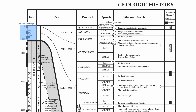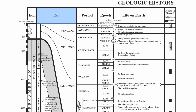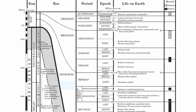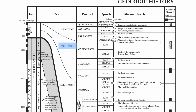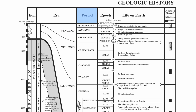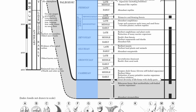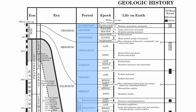Eons can be broken up into a smaller time unit called an era. The Precambrian is also an era, but more important are the Phanerozoic eras, which include the Paleozoic, the Mesozoic, and the more recent Cenozoic. Eras can be broken up into even smaller time units called periods. These are probably going to be the most important time unit tested on your Regents exams, so make sure you understand the names and what periods belong to what eras.